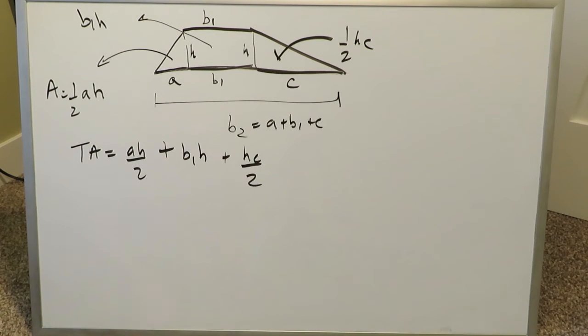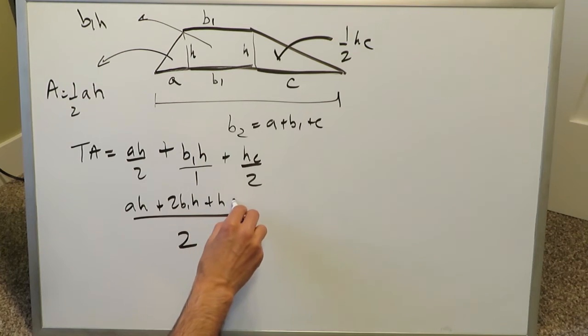All you have to do here for this proof is do a common denominator. The common denominator here is 2. Then you have a, h. Here you have 2b1, h, because 1 goes into 2, 2 times and multiplies the numerator, plus h, c.